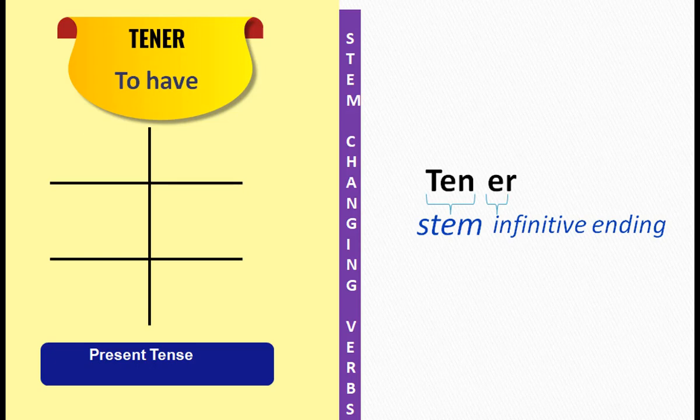This is the second video in the series of IE stem-changing verbs. In the previous video we saw a stem-changing verb where the stem changed from A to EA. And this is the second one in that series.